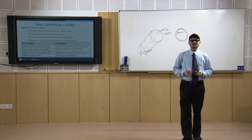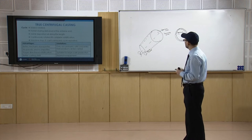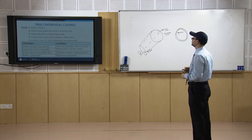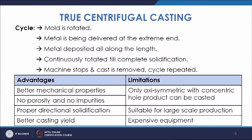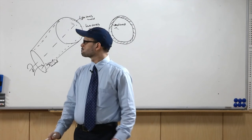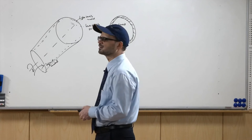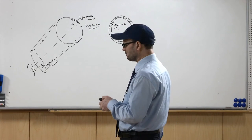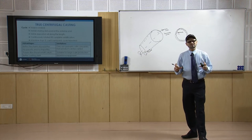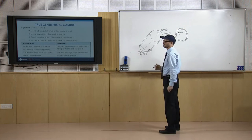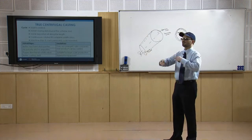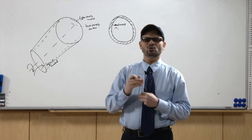Once the material is removed, another batch of molten metal in the required quantity is added and the cycle continues. The advantages include better mechanical properties, no porosity and impurities, proper directional solidification, and better casting yield. The limitation is that only axisymmetric products with a concentric hole can be cast; it is suitable for large-scale production but the equipment is expensive since you need good support, roll facilities, and a strong motor to rotate the heavy mould.